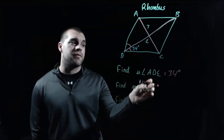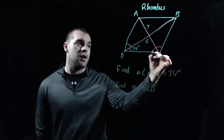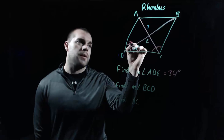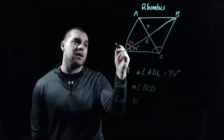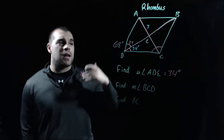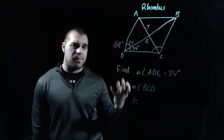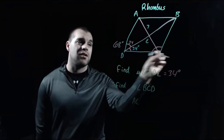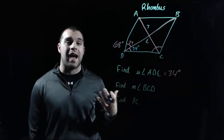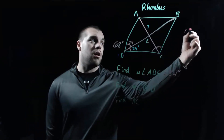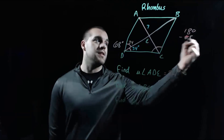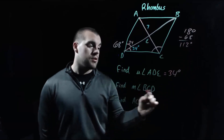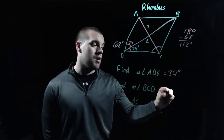Next we're going to find the measure of angle BCD, which is this entire angle in the bottom right-hand corner. We just said that this little piece of the angle up here was 34 degrees, so that entire angle is 68 degrees. What we have to remember is that a rhombus is a special kind of parallelogram, and one of the properties of a parallelogram is that consecutive angles must be supplementary — they have to add up to 180 degrees. So if we take 180 and subtract 68, we end up with 112 degrees. The measure of angle BCD is 112 degrees.